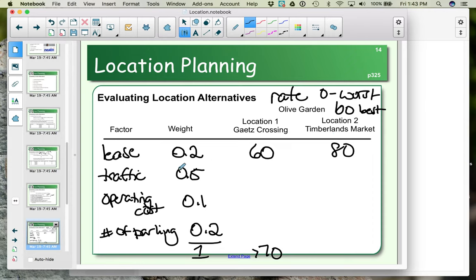Then we look at traffic volume. Well, we have more traffic going down Taylor Drive than we do going down 67th and 30th. For traffic, more traffic is better because that's more customers coming to your Olive Garden. So let's give this traffic for Gates Crossing a rating of 75, and for Timberlands we'll give it a 60. Remember, higher number is better.